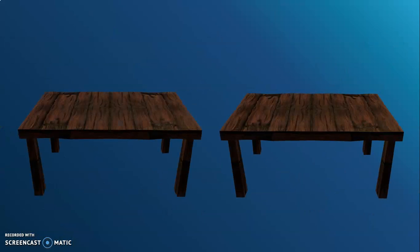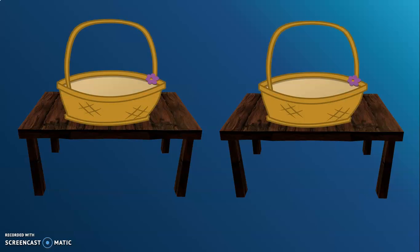Here, we have two tables. On the tables, we have one basket each. On the first table, we have some fruits. Let us count them. One, two, three. There are three apples in the first basket.